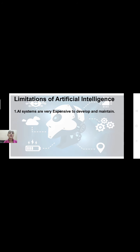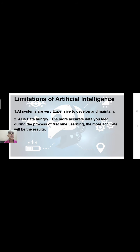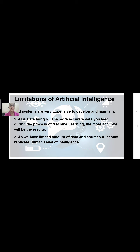Now let's come to the limitations of artificial intelligence. As we know, everything has its pros and cons. The first limitation is that AI systems are very expensive to develop and maintain. The second is that AI is data hungry — the more accurate data you feed during machine learning, the more accurate the results. Since we have a limited amount of data and sources, AI cannot replicate human-level intelligence. The last and most important limitation is unemployment — experts say AI can replace all boring, repetitive, and labor-intensive work, which can be harmful to the workforce in companies.